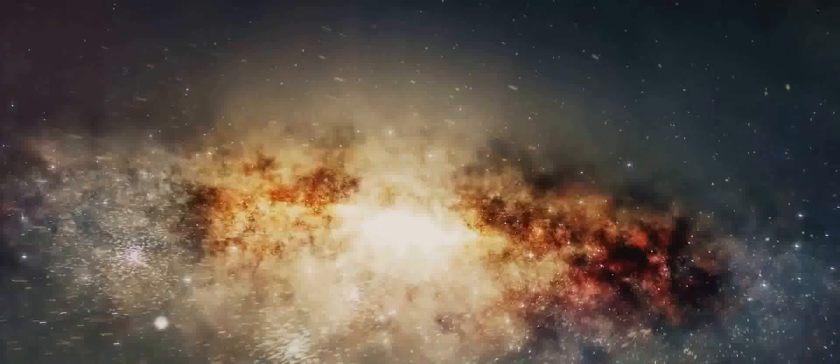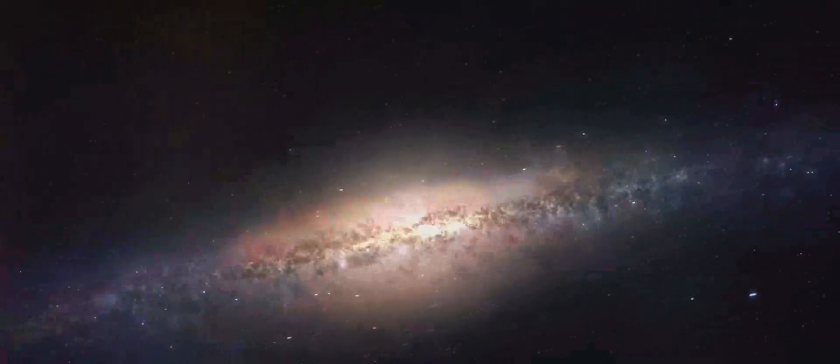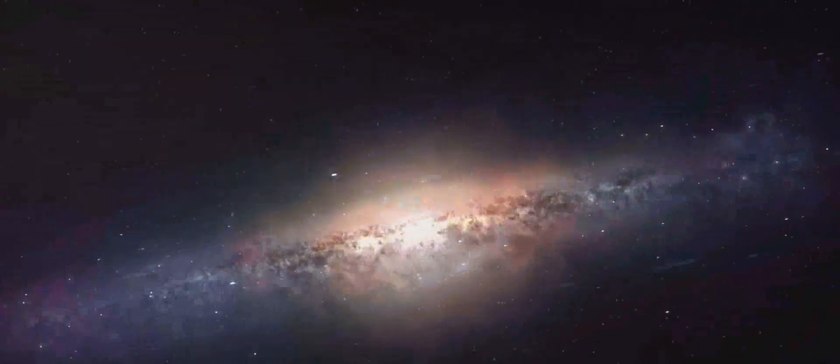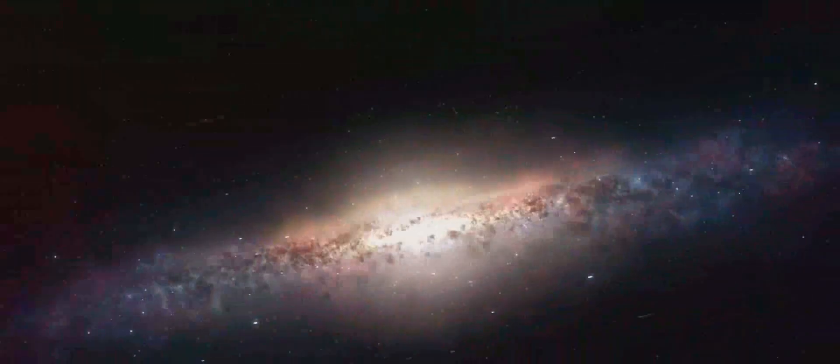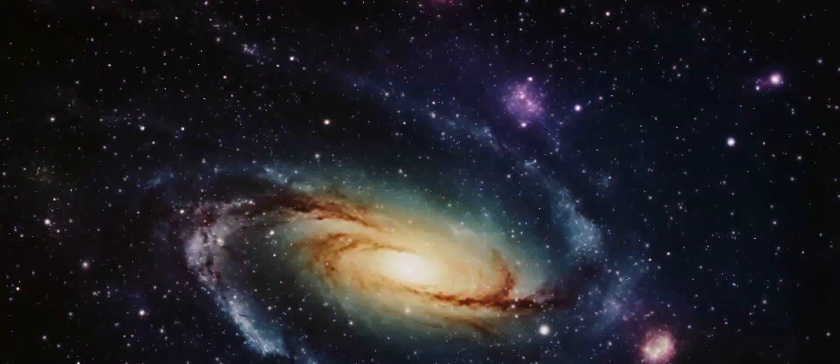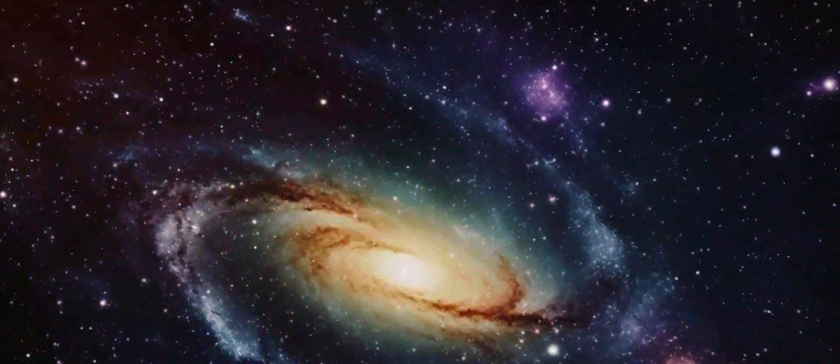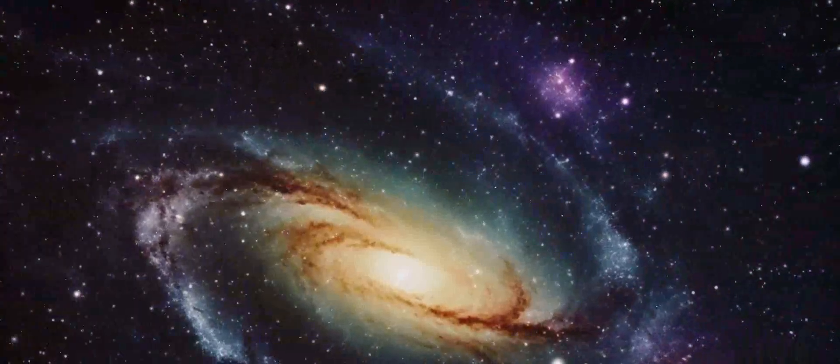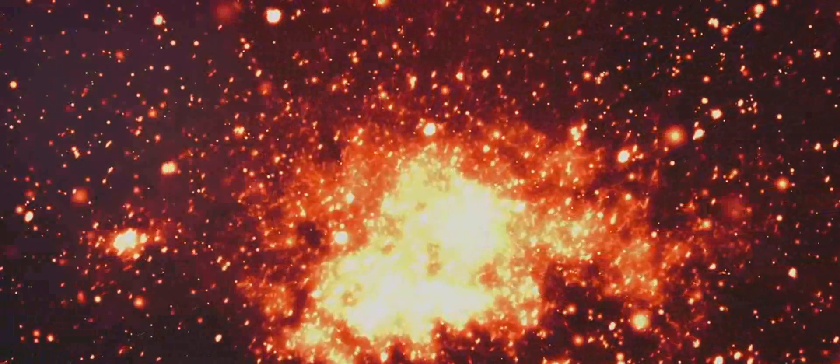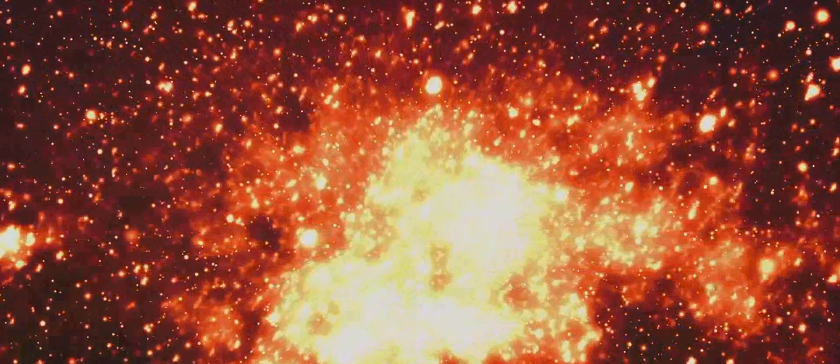But galaxies aren't just shaped by their interactions with other galaxies. They're also influenced by the invisible forces of dark matter and dark energy. Dark matter, an unseen form of matter that makes up about 85% of the universe's matter, helps to bind galaxies together. It forms a kind of cosmic scaffolding around which galaxies form and evolve. Dark energy, on the other hand, is driving the expansion of the universe. It's a mysterious force that works against the pull of gravity, causing galaxies to move away from each other at an accelerating rate. This expansion doesn't just affect the space between galaxies, but also plays a role in shaping the structure of the universe and the evolution of galaxies within it.